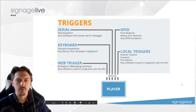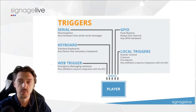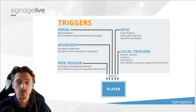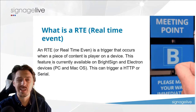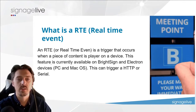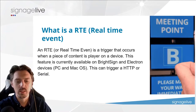Let's review the different ways triggers can be input into the player. You can use serial input, GPIO for button pushes and relays, keyboard — the most standard option, especially for testing — and local triggers for things like Kramer Control, Crestron, fire alarms, and basically any service or software. Web triggers cover emergency messaging as discussed. There's also something called an RTE or real-time event — a trigger that occurs when a specific piece of content is played on the device. This feature is currently available on BrightSign and Electron devices, which include PC and macOS, and can trigger either HTTP or serial.